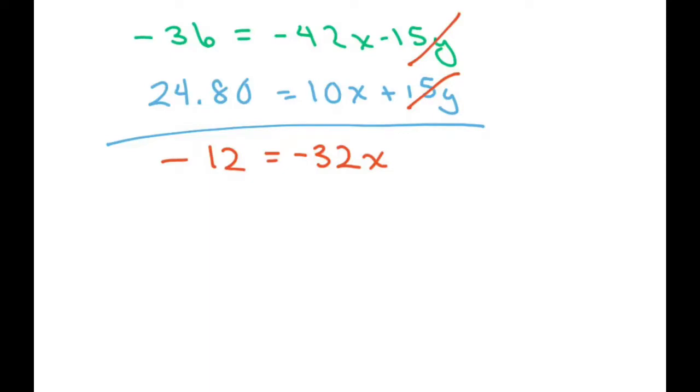So now you have to solve for x. You divide both sides by -32 and you're going to get x equals 0.35. Now they're not looking for the postcards, they're looking for the envelopes. So what we're going to do is plug in x and I'm going to plug it into this equation and then we're going to solve for y.